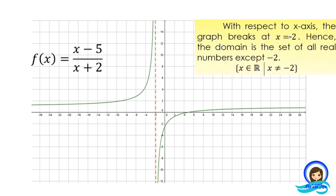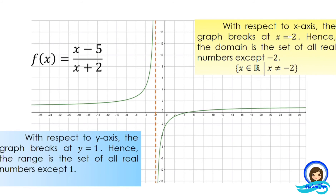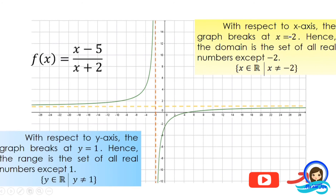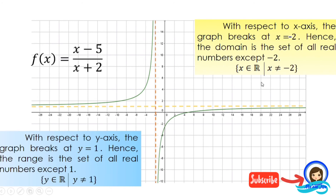With respect to the y-axis, the graph breaks at y equals 1. The graph gets closer to this value; however, it does not cross it. Hence, the range is the set of all real numbers except 1. In symbols, it is written as the set of all y's where y is an element of real numbers such that y is not equal to positive 1. So we have now identified the domain and range of this rational function.